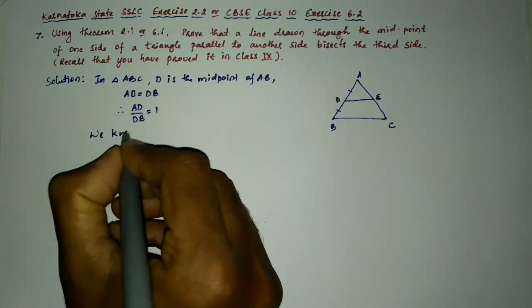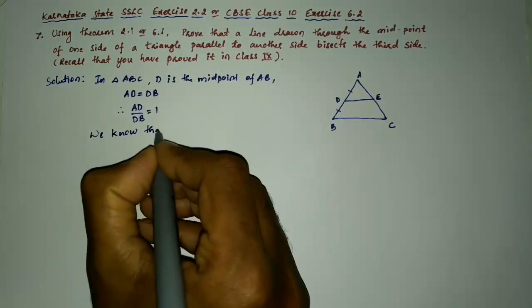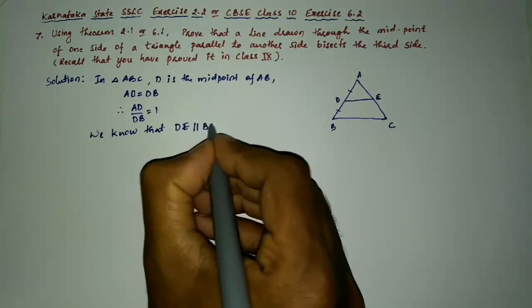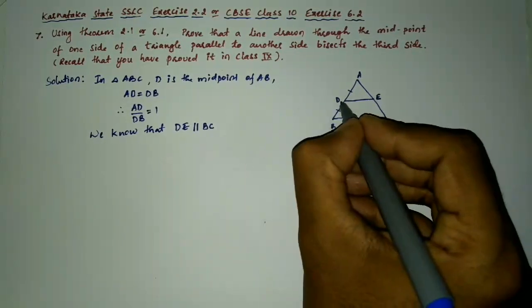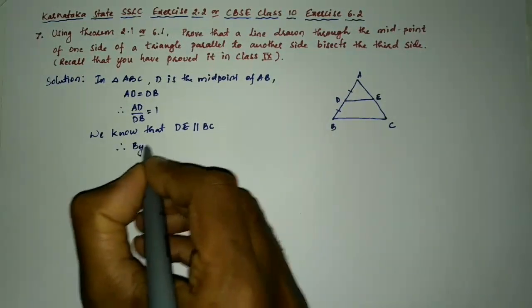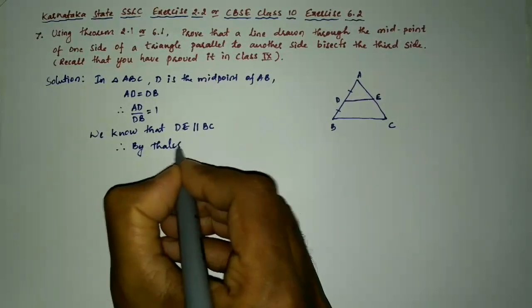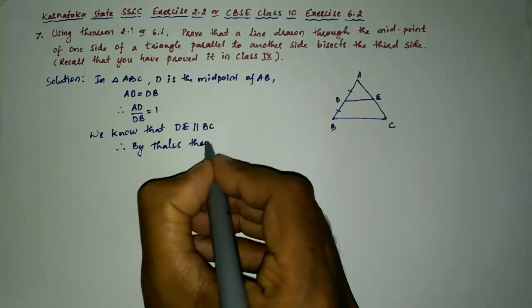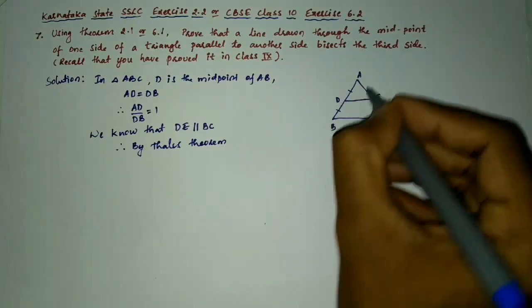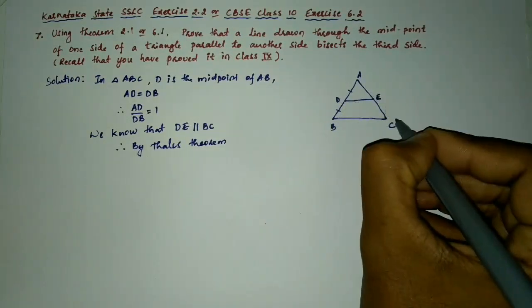We know that DE is parallel to BC. Therefore by Thales theorem we can write AD by DB is equal to AE by EC.